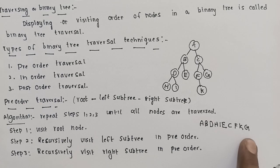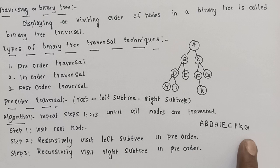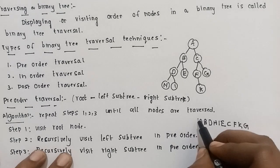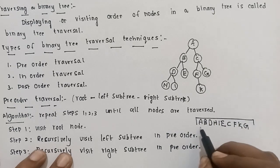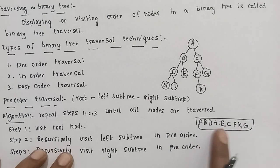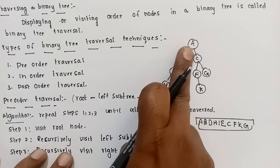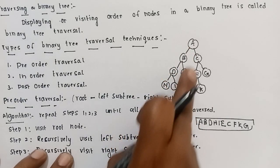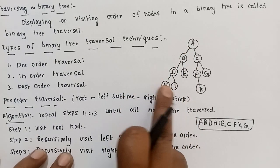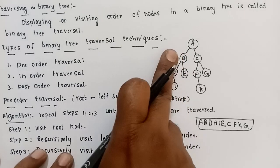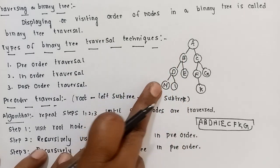So for the given tree, if you traverse in pre-order, the result gives you a sequence of nodes. Pre-order traversal visits the root first, then the left subtree recursively in pre-order, and then the right subtree.